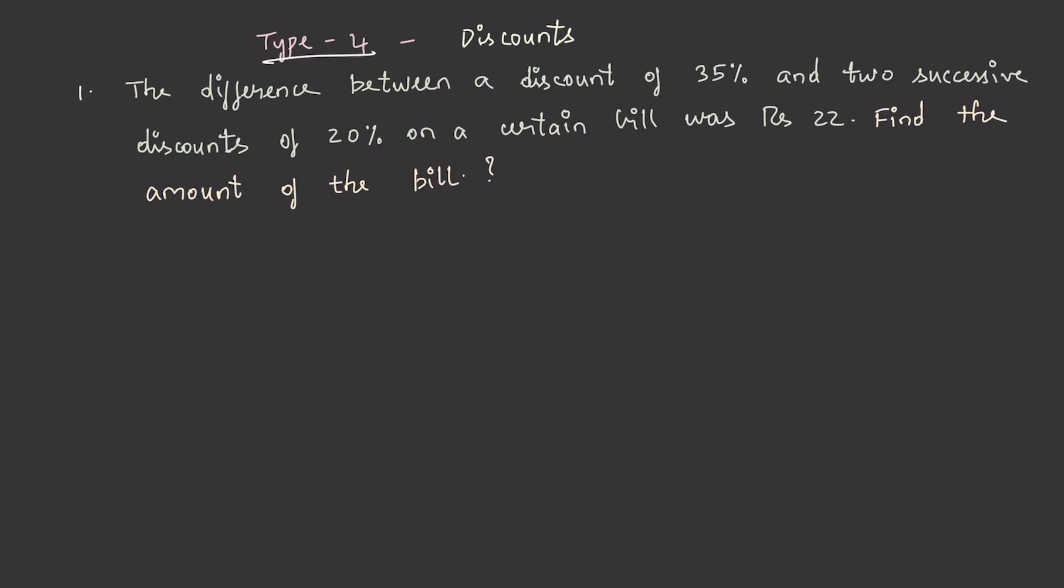Let us understand the questions related to discount in profit and loss type 4. Let's solve questions related to discounts. The difference between a discount of 35% and two successive discounts of 20% on a certain bill was rupees 22.